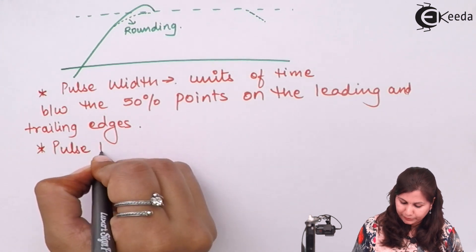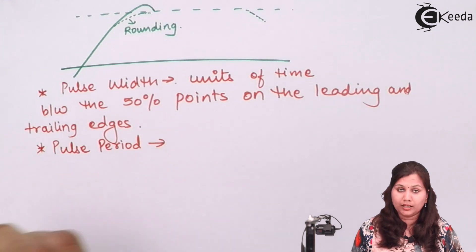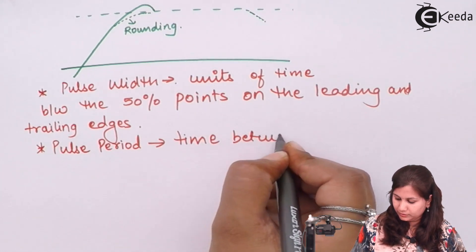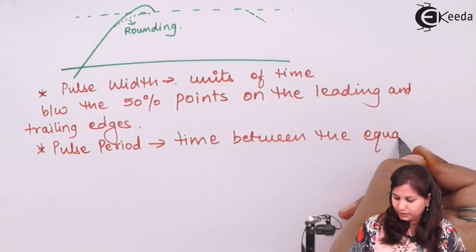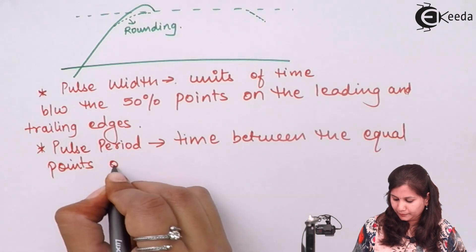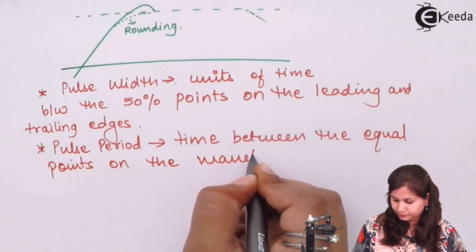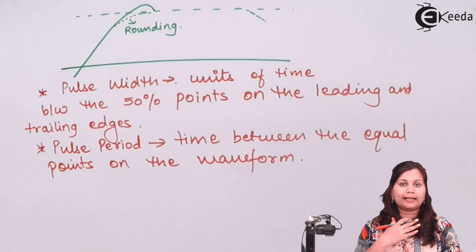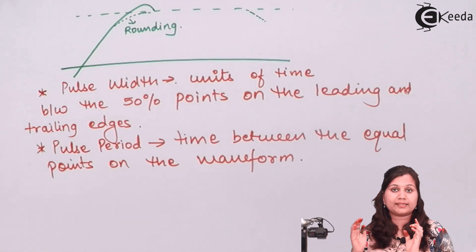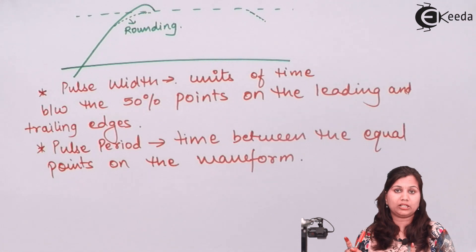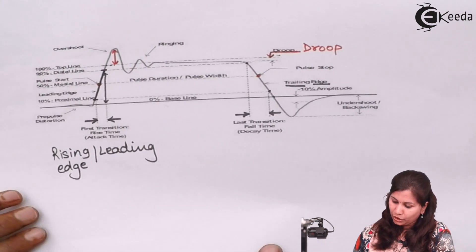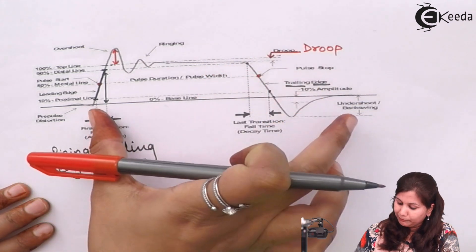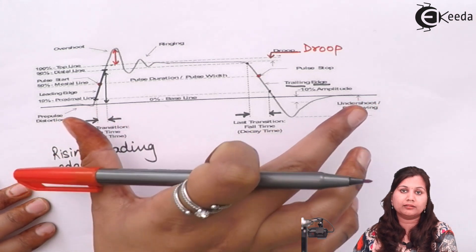Pulse period is again measured in units of time and it is the time between equal points on the waveform. Suppose we are having a waveform in which pulses are repeating — if we take the same corresponding points on successive pulses, the time period between these two equal points on the waveform is called the pulse period.